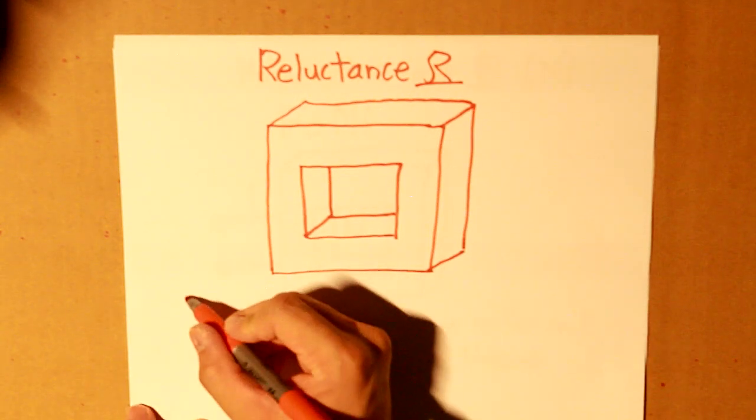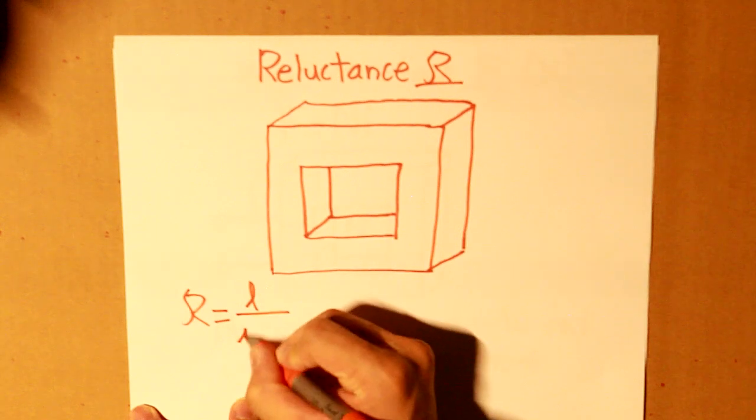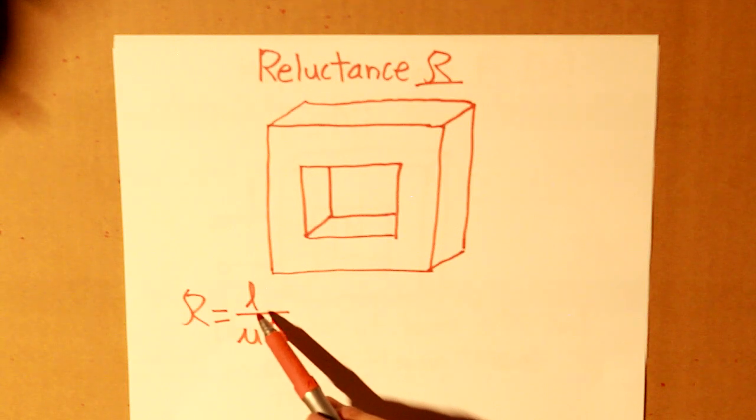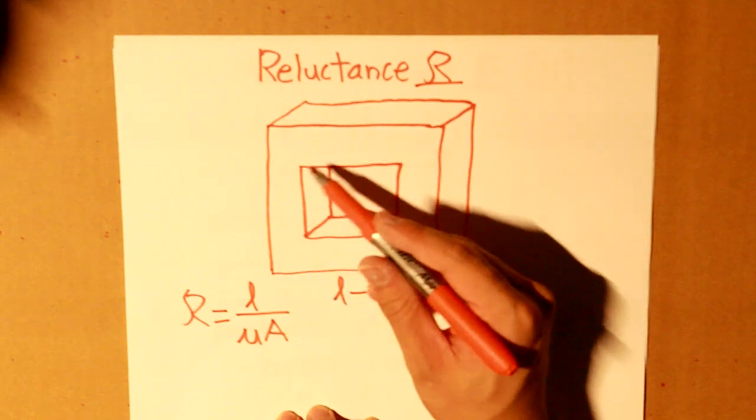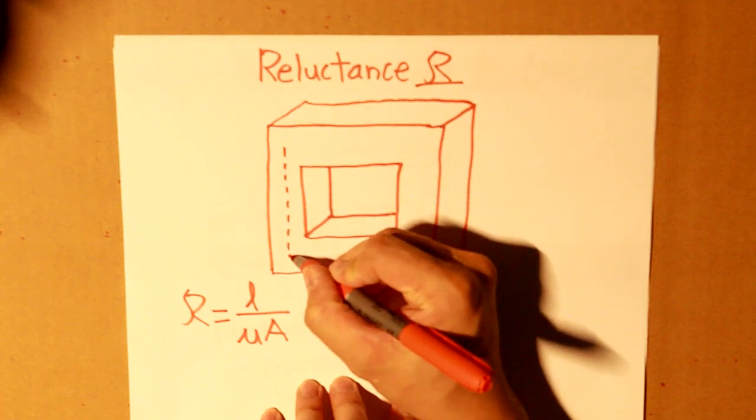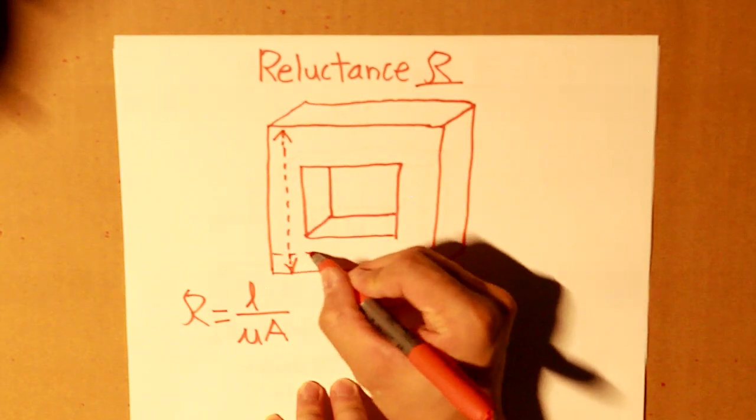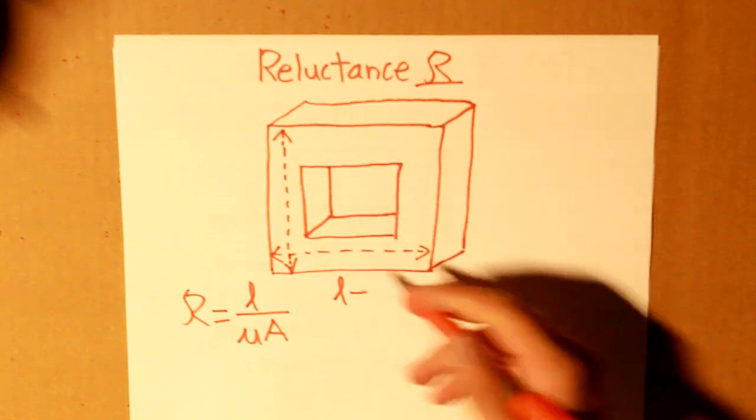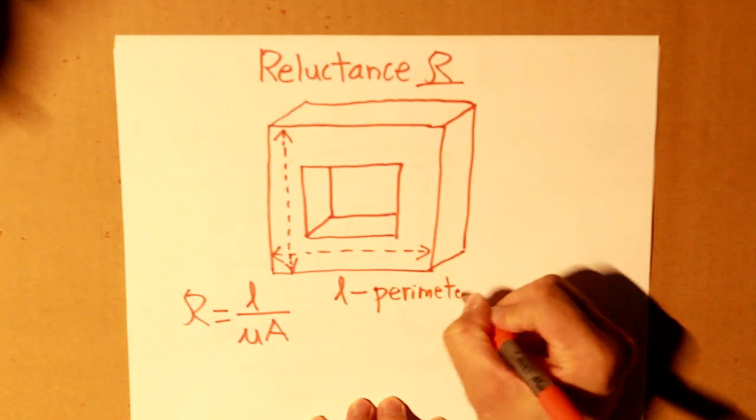Now, cursive R is equal to the numerical term of these three parameters. Now, this cursive L, this lowercase cursive L, symbolizes the perimeter of the surface of the core. So, here's the perimeter. So, those are the two sides, and then multiply by two. Cursive lowercase L is the perimeter of the core.